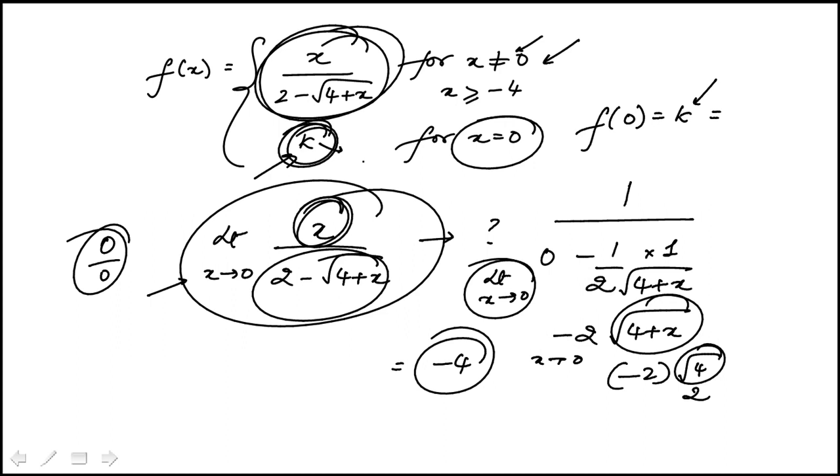So if we set k equal to minus 4, then this will be a continuous function at x equal to 0. Another approach you could take is to take a really small value of x and plug it in here. You'll see that comes very close to minus 4. You can also do it that way.